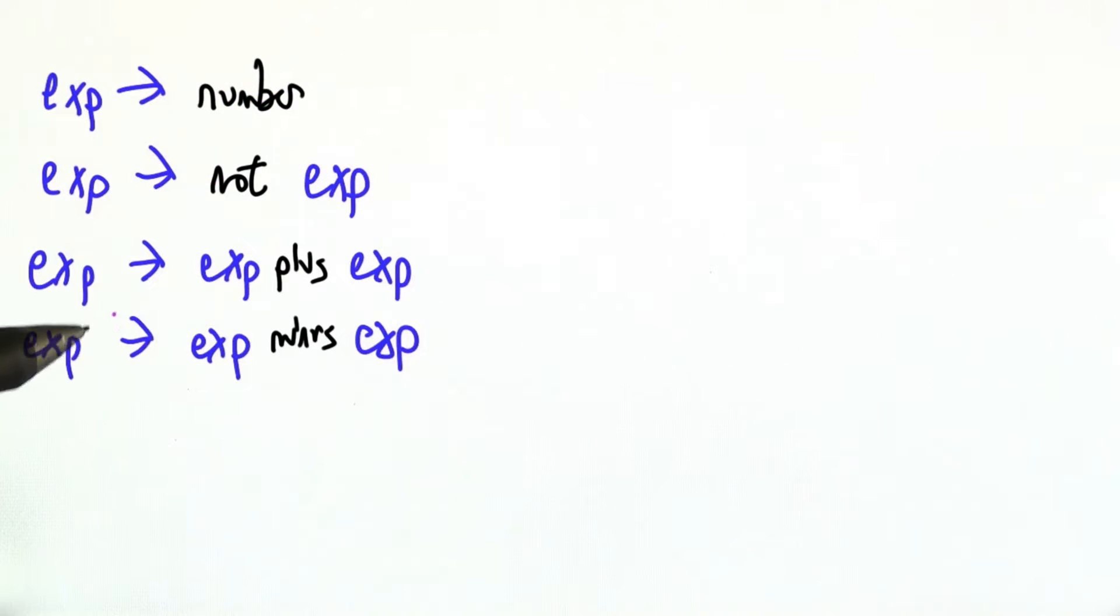So here I've written a pretty standard arithmetic expression grammar. An expression can be a number, or an expression plus an expression, or an expression minus expression, or maybe a negated expression like negative 3. And we'll want to build up parse trees for this.